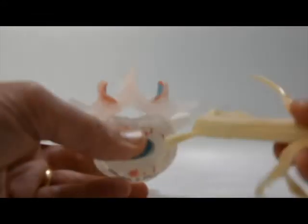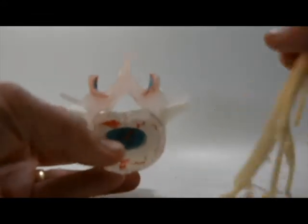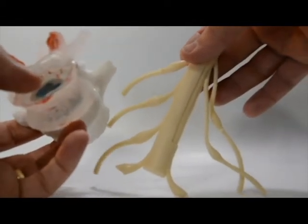To remove the cauda equina to show the spinal canal, simply pull the nerves up through the model.